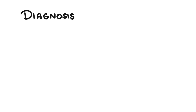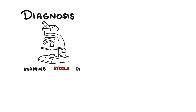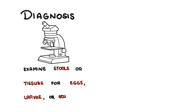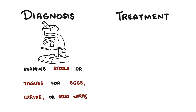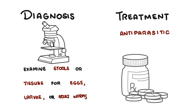Moving on to diagnosis: the diagnosis of helminths is generally made by examining the stool or tissues of specific organs, looking for eggs, larvae, or adult worm forms, usually identified through a microscope. Treatment of helminth infection is with antiparasitic medication.